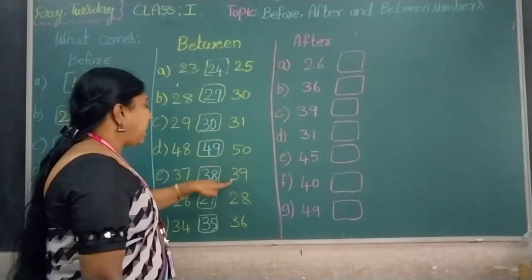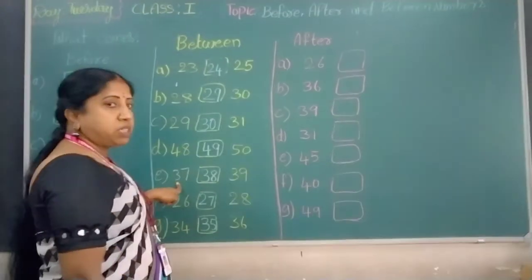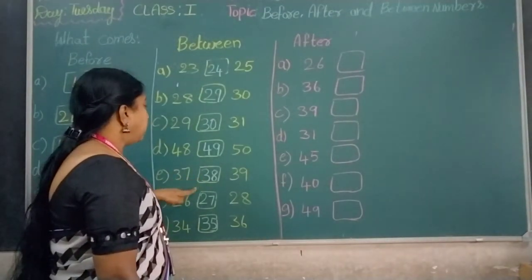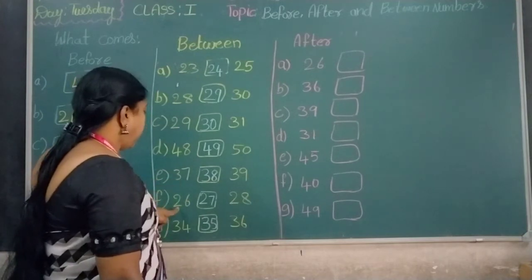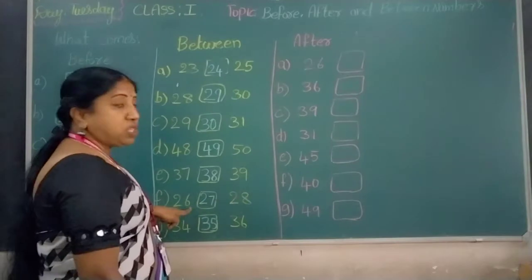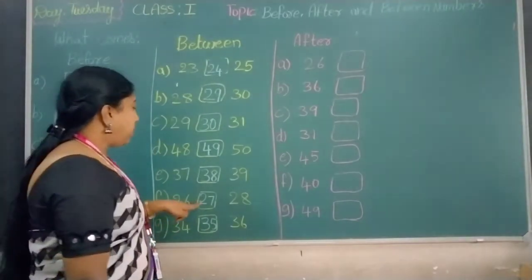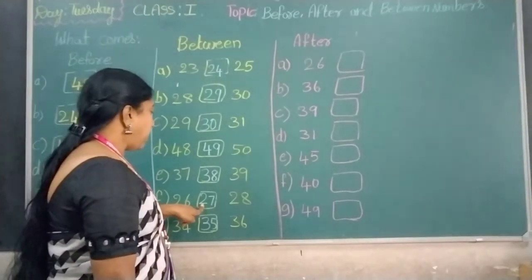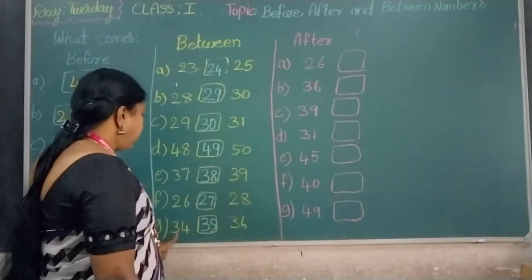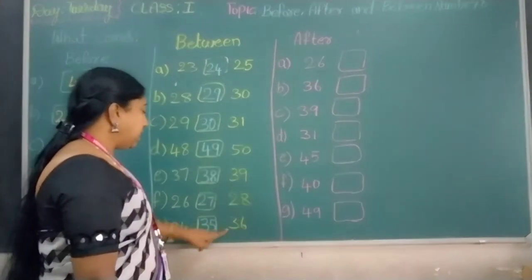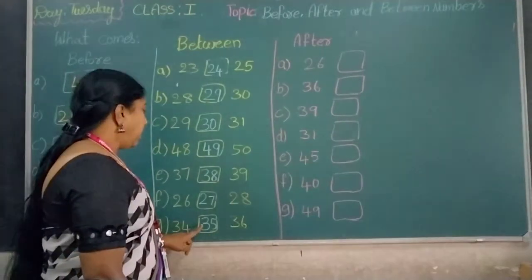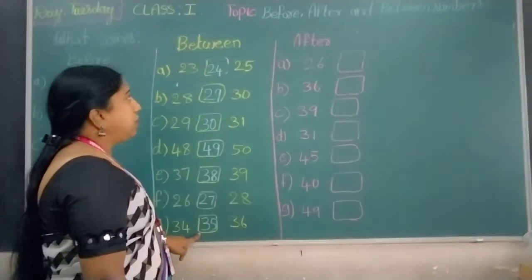37 and 39: which number comes in between? Number 38 comes in between. 26 and 28: which number comes in between? 27, number 27 comes in between. 34 and 36: which number comes in between? Number 35 comes in between.